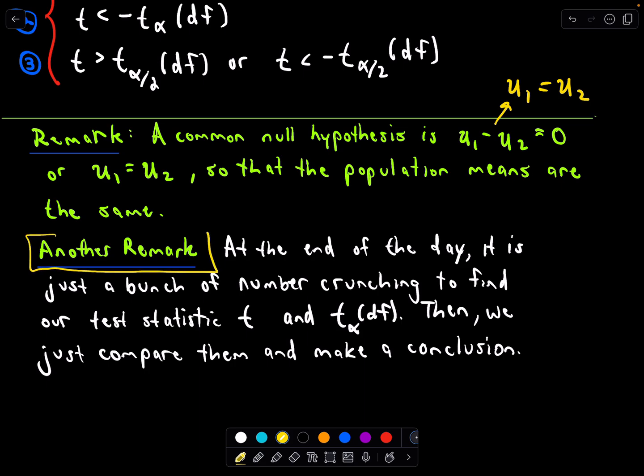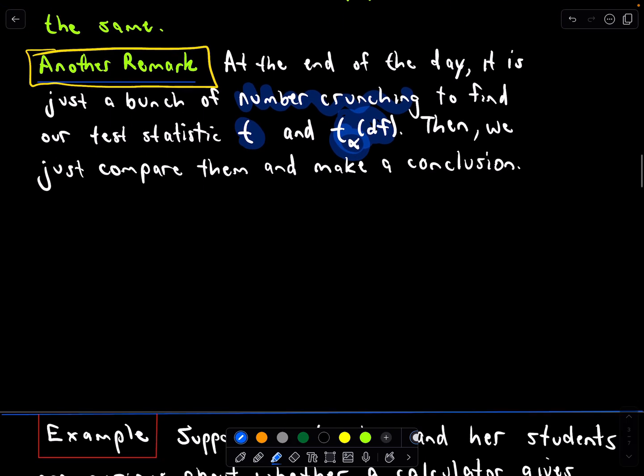At the end of the day all we're doing is just a bunch of number crunching. Please do not do this by hand. Use a calculator or some sort of a software package. All we're going to do is just compute that test statistic, we're going to compute this value based on the degrees of freedom and our level of significance, and then we're going to make a conclusion.